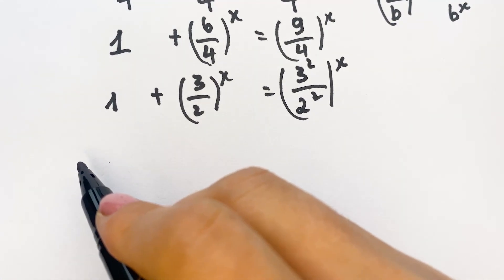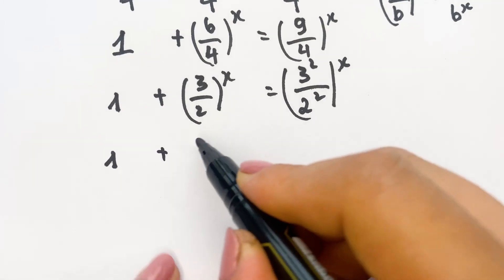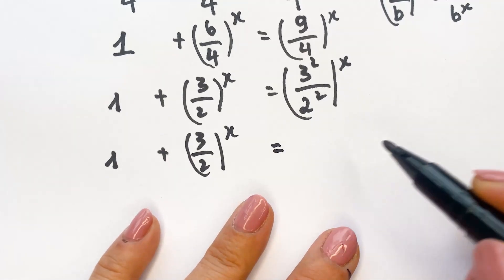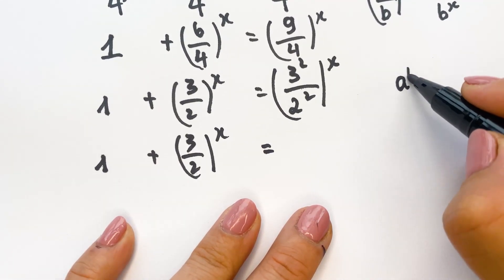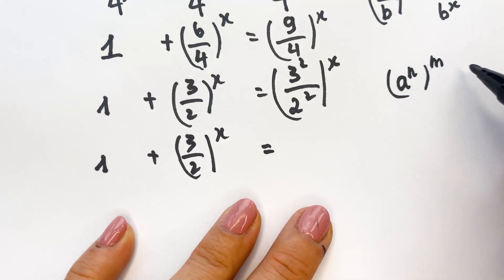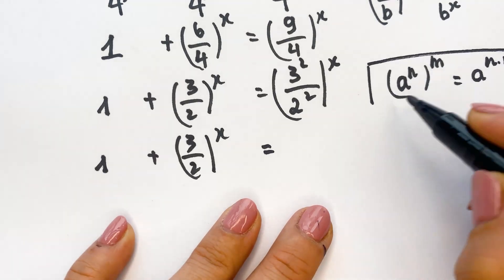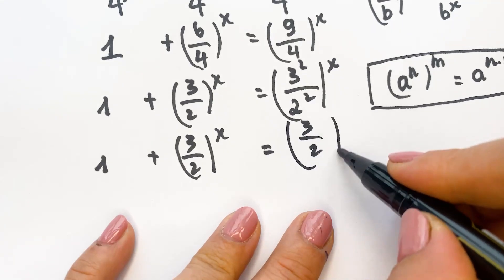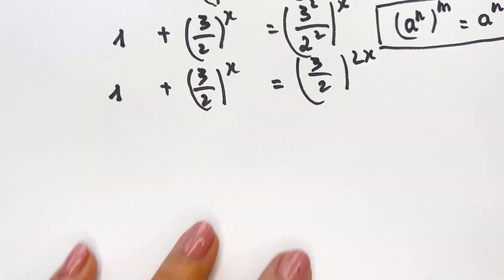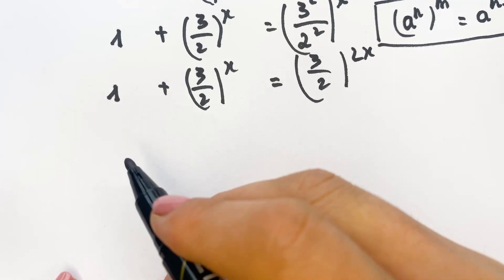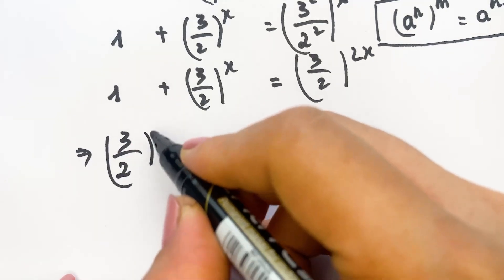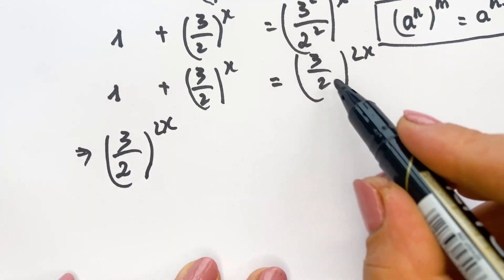And so, you can write 1 plus (3 over 2) power x equals — because using the rule A power n, whole power m, equals A power n times m (the exponential rule) — therefore you can write (3 over 2) whole power 2x.